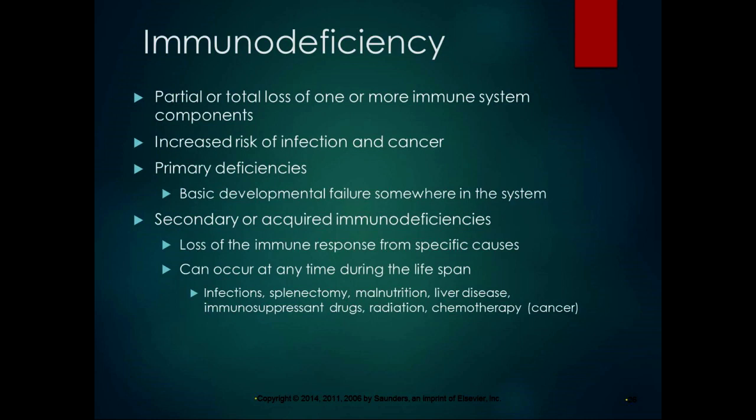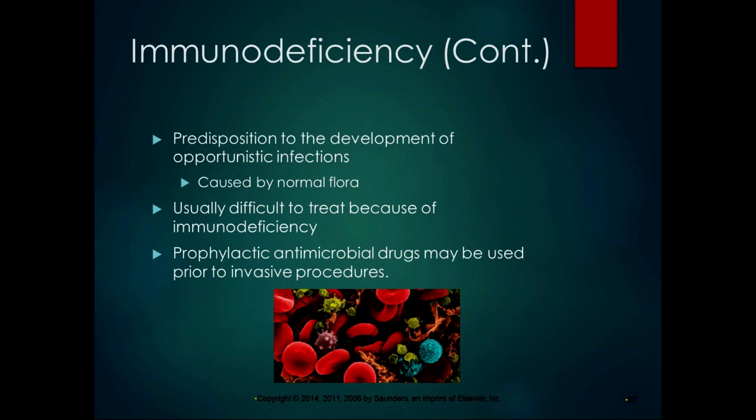Secondary or acquired immunodeficiency is the loss of immune response from specific causes. It can be caused by infection, splenectomy (for example after a ruptured spleen), malnutrition, liver disease, immunosuppressive drugs, radiation, or chemotherapy. When immunodeficient, you are predisposed to opportunistic infections caused by normal flora, which are usually difficult to treat. Antimicrobial drugs are often used prophylactically prior to invasive procedures to help prevent immune system complications.